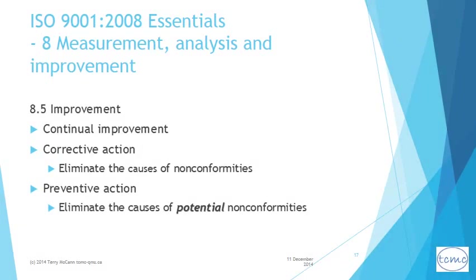8.5 makes clear that continual improvement of the effectiveness of the QMS is not an option but a requirement. 8.5 also requires the establishment of a documented procedure to handle corrective actions, which seek to eliminate the causes of non-conformities which have occurred, and preventive actions, which seek to eliminate the causes of potential non-conformities which have not yet occurred but for which one or more root causes have been identified. Corrective action should not be confused with a simple correction, which addresses a non-conformity without dealing with the root cause.